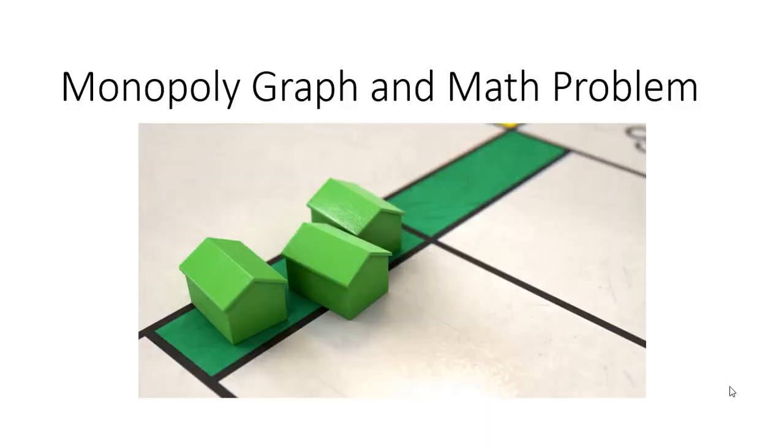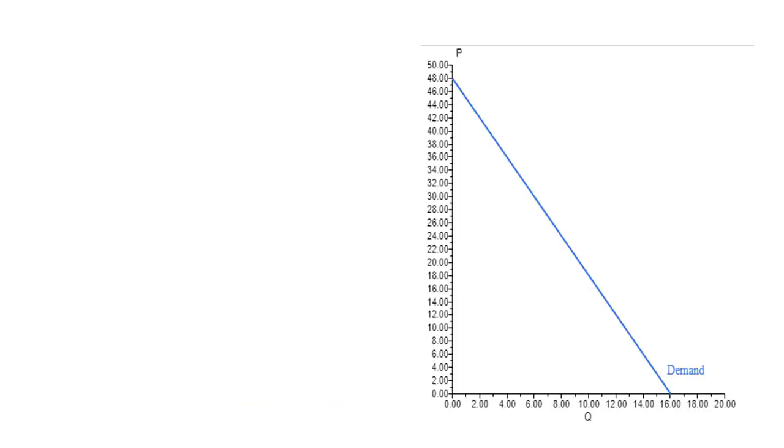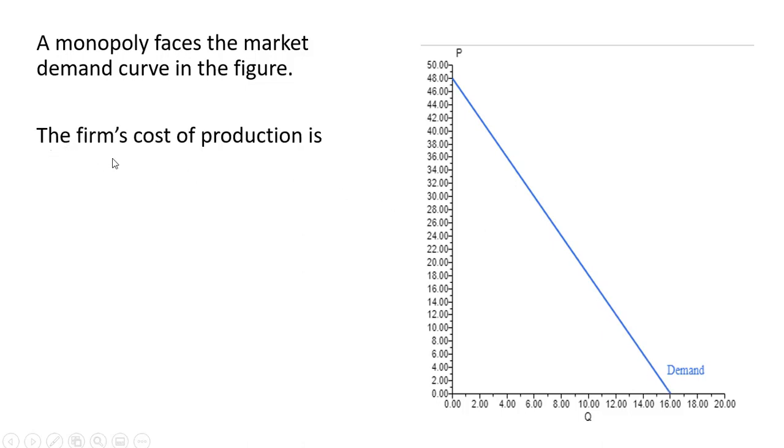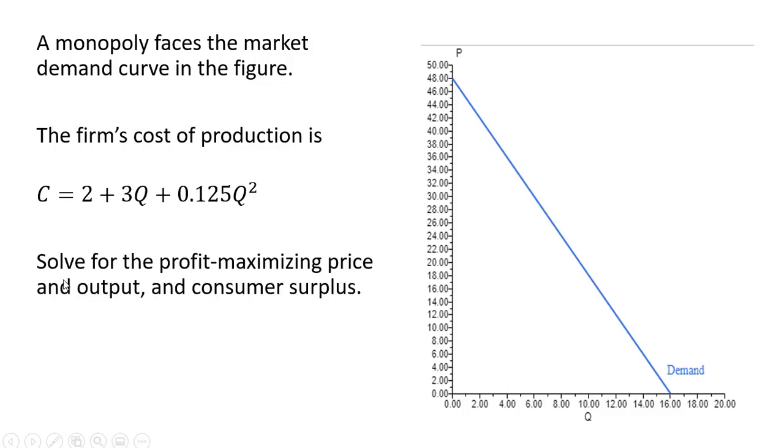Hello, in this video we're going to do a monopoly problem that involves a graph and some mathematics. Here is the monopolist market demand curve. And the monopolist has a cost of production as follows. And with this information, the graph and the cost equation, we want to solve for the profit maximizing price and output along with the consumer surplus.